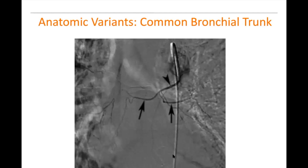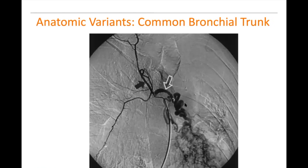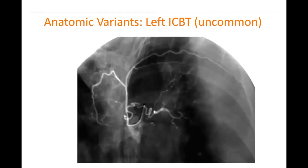Here are some variants. We have a common bronchial trunk with our catheter in the aorta — here's the main stem bronchus right and left — and we can see this common trunk leading to the right and left bronchial arteries. This is another common bronchial trunk, but notice there is hypertrophy of this vessel and hyperemia of the pulmonary parenchyma. The catheter goes into this common trunk, with the first intercostal artery coming off, a nice right bronchial artery curling down, and then a very irregular left bronchial artery that was the cause of this patient's hemoptysis.